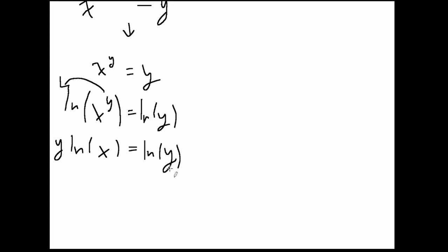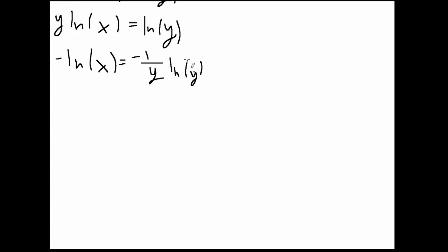Now, what we want to do is divide by y and multiply by negative 1 on both sides. This might seem arbitrary, but it's all to simplify at the end. So if we divide by y and multiply by negative 1, we'll have negative 1 over y multiplied by ln of y. And now we want to carry this negative 1 into this logarithm. So what we would have is negative ln of x equals 1 over y multiplied by ln of 1 over y.